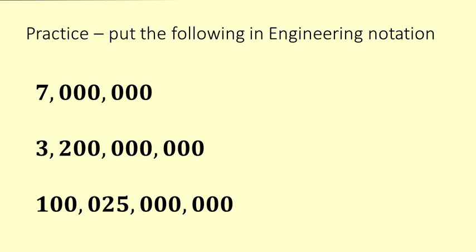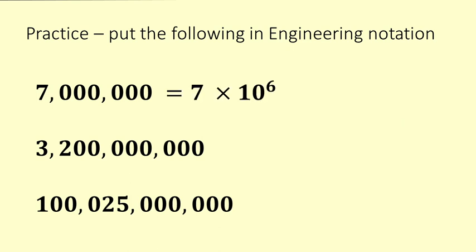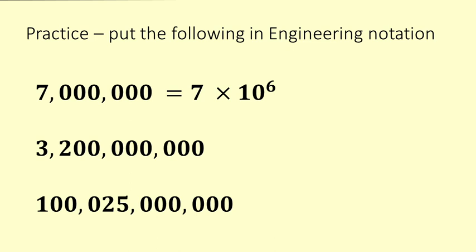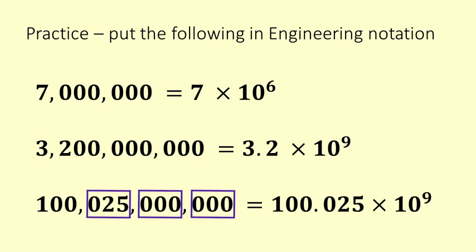Here's some practice — pause the video now and try these, then start it up and I'll give the answers. Right: 7,000,000 is 7 times 10 to the 6, because you can see two blocks of 3, or 6 places moved. Then 3,200,000,000 is 3.2 times 10 to the 9. And 100,025,000,000 is 100.025 times 10 to the 9. If that isn't clear, it might be good to go back to the beginning of the index part and try again.